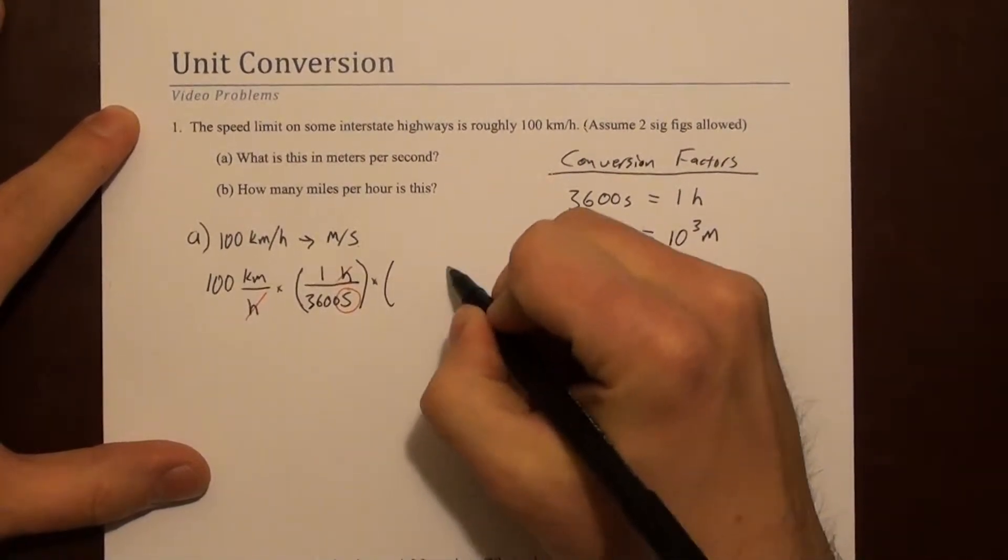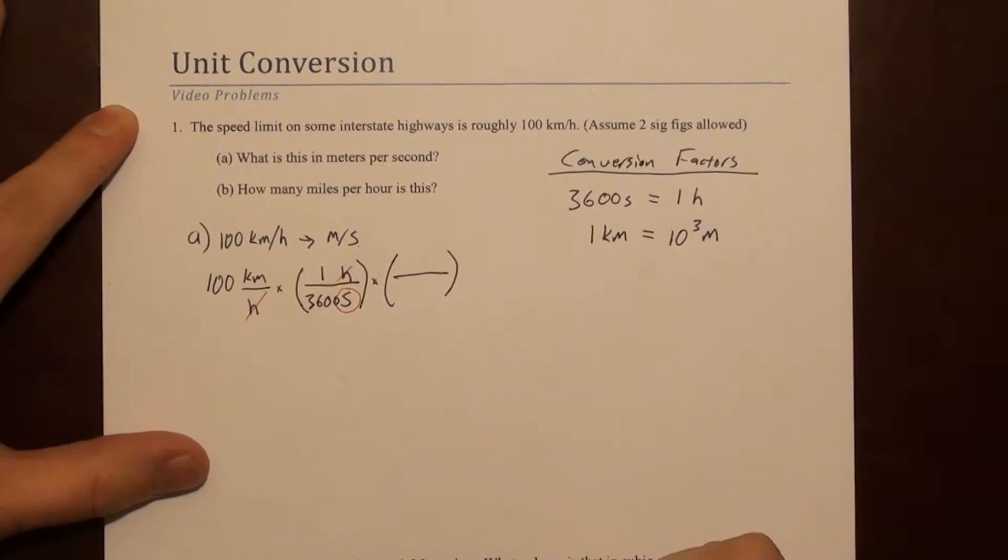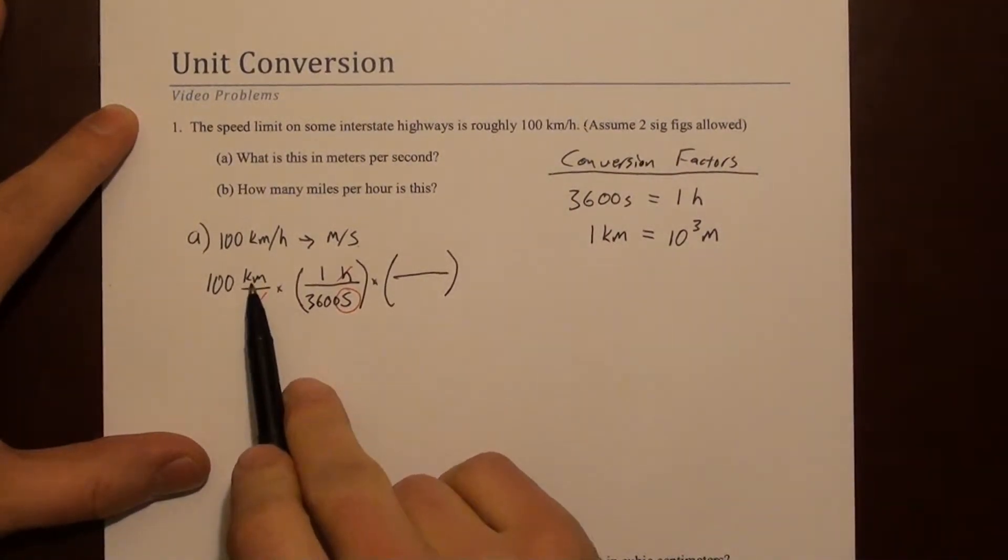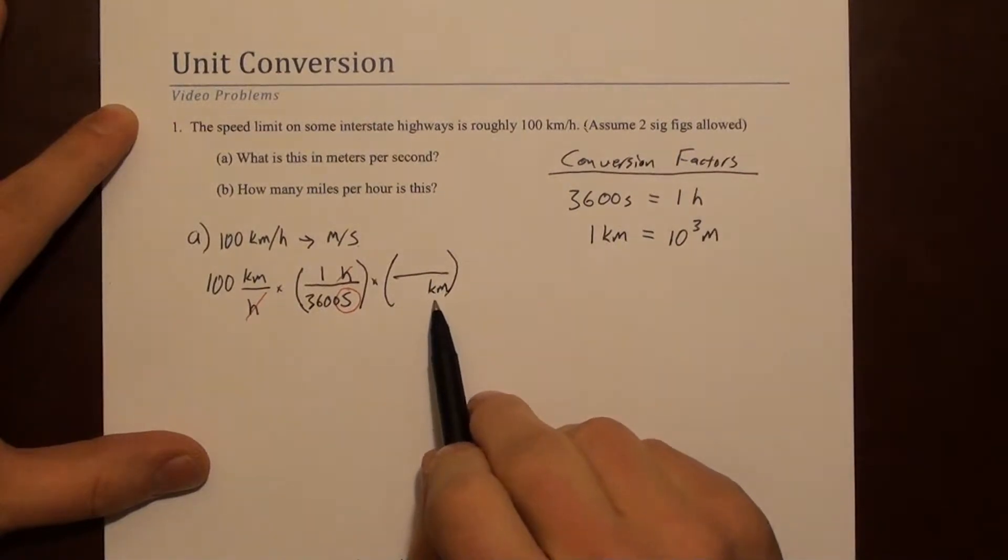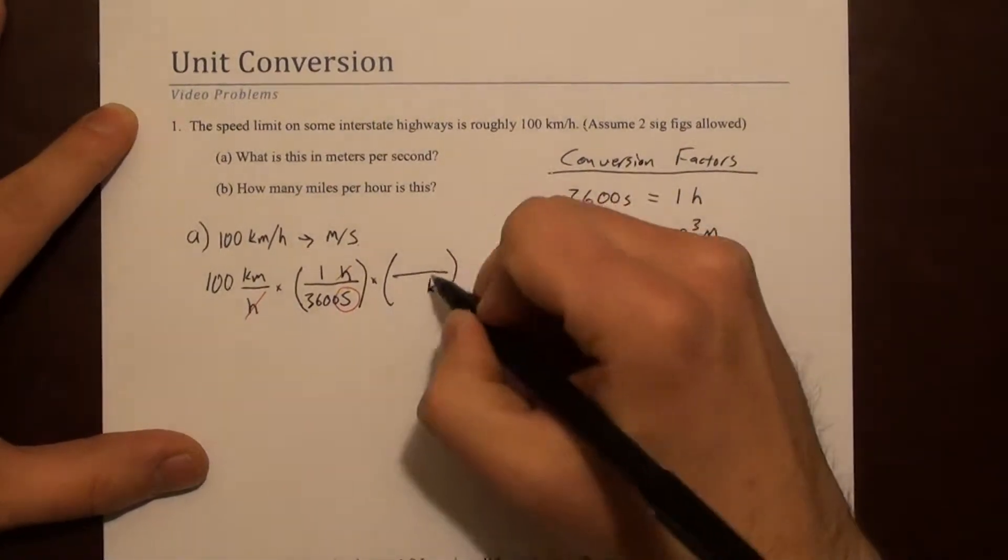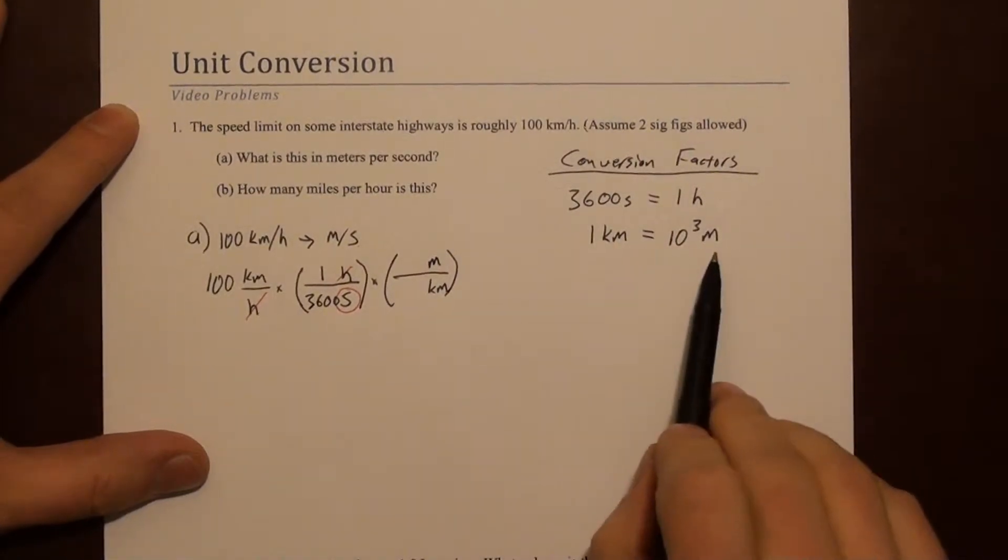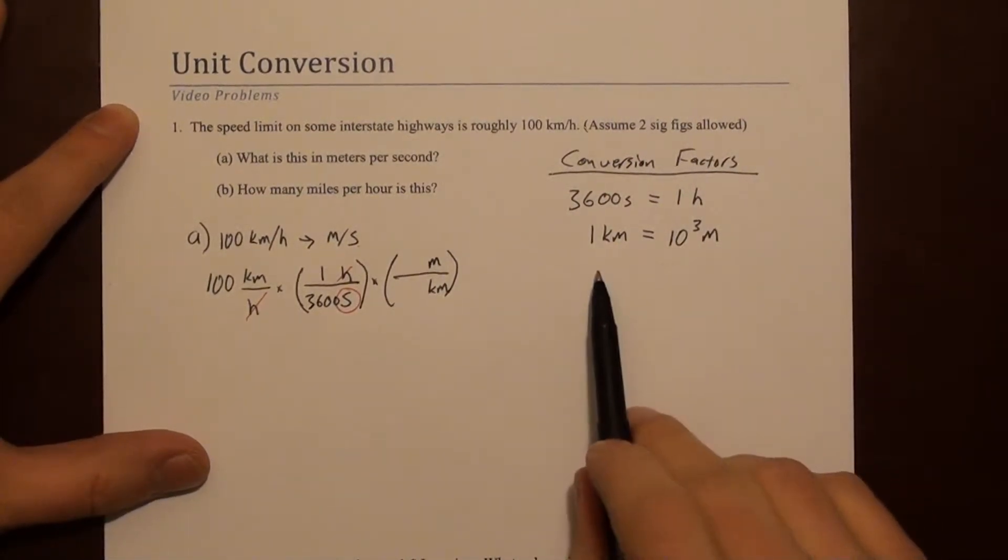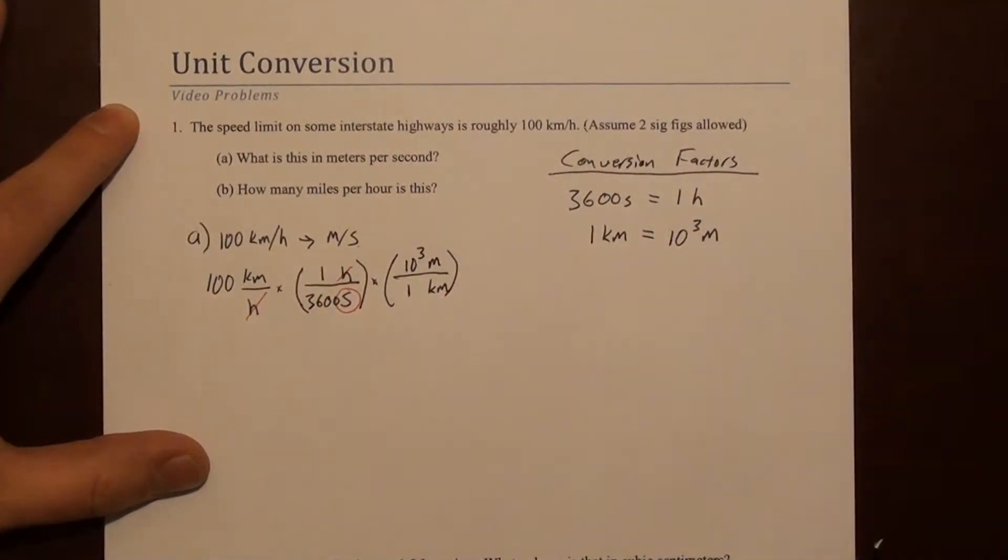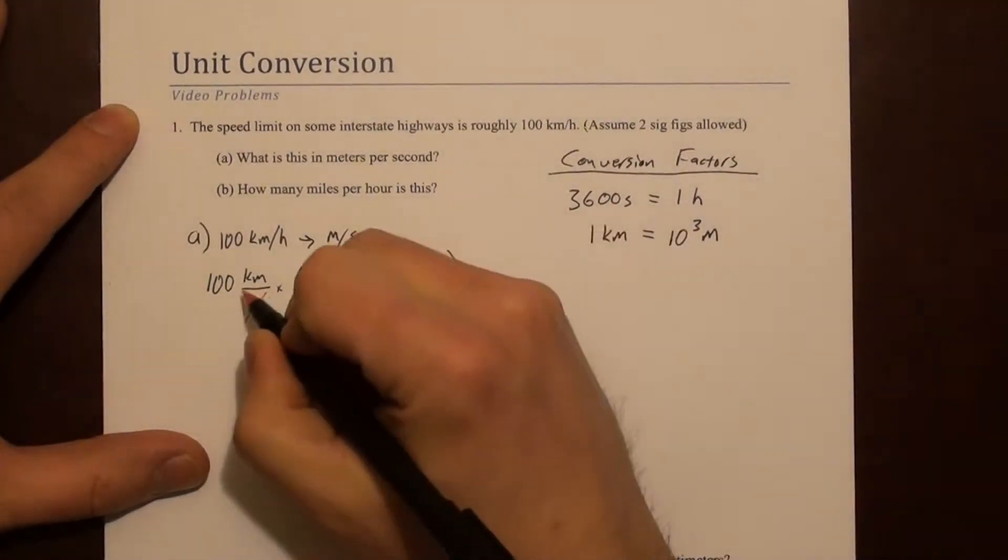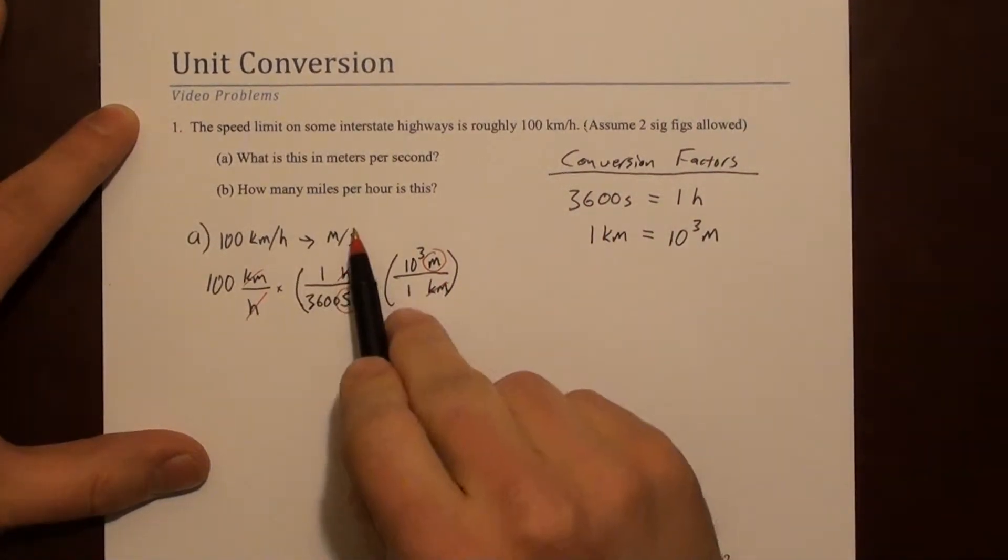Then we can fill that in, our conversion factor here. And we've got a kilometer in the numerator. We want that to go away, so we put it in the denominator in our fraction. And then we put meters upstairs. Then we use this conversion factor to fill that out. So it looks like 1 kilometer is 10 to the 3 meters. We can cancel out some units - kilometers and kilometers. Looks like we're left with meters per second, which is what we want.